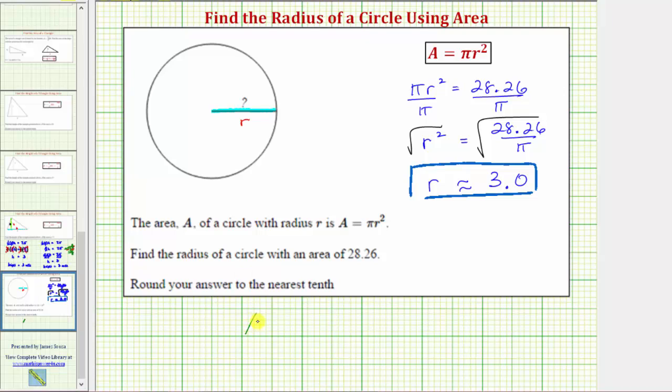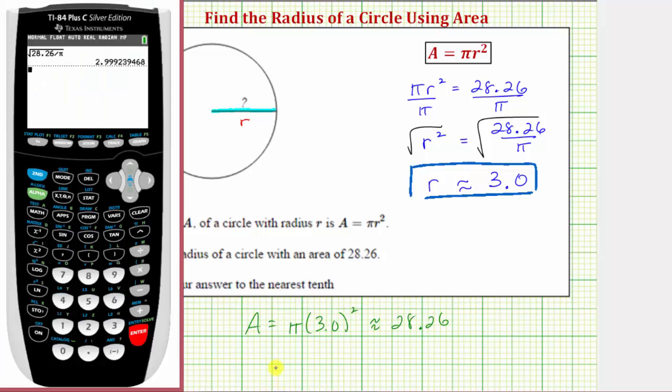Using the area formula, the area is equal to pi times three point zero squared, which should be approximately equal to the given area of 28.26. Notice how because we did round up though, this area is going to be a little bit more than 28.26. Let's verify this on the calculator. So we have pi times three point zero squared, enter. And notice how this is very close to 28.26. It's a little bit more, again because we did round the radius up.